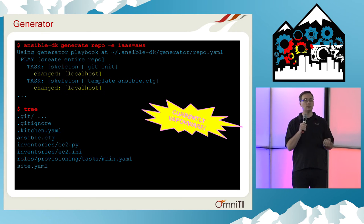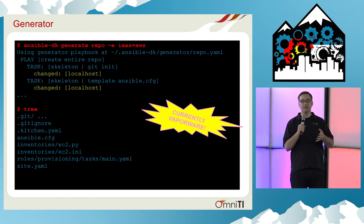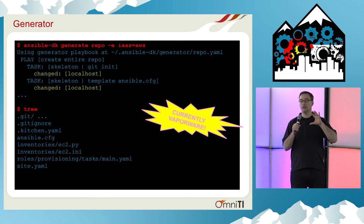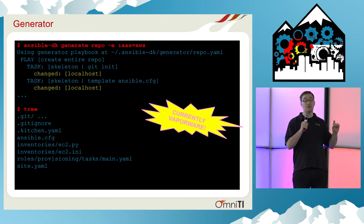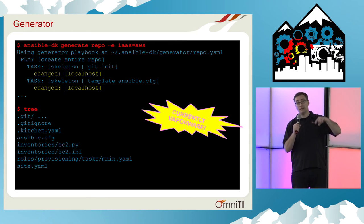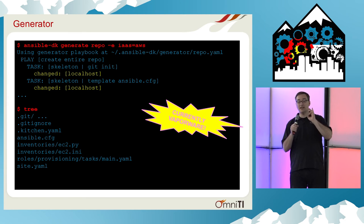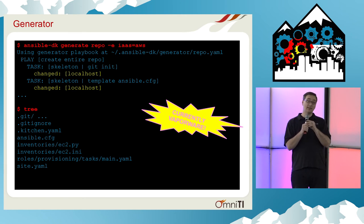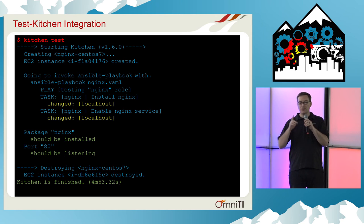It includes a special tool called a generator, which you can customize. This allows you to set it up so that your team, whenever they make a new repo or a new playbook or a new role, it gets created exactly the same way that you want it to be created — which is great. That's currently an open pull request.